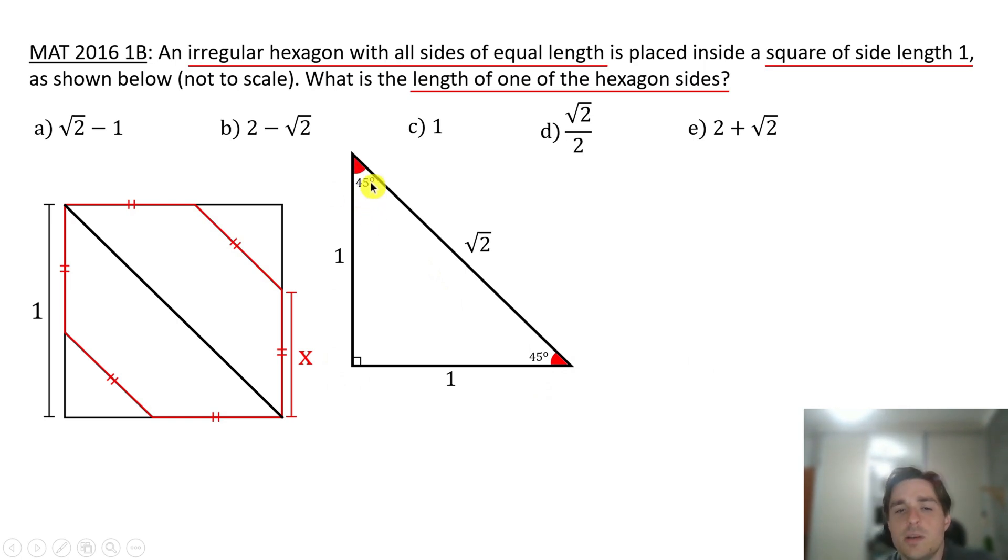So now let's detach this smaller triangle here. This side here is equal to one minus x. This side here is also equal to one minus x, and the hypotenuse here is the side of our hexagon that we have denoted by x. So this angle here is a right angle, and notice that here is 45 and here is 45.